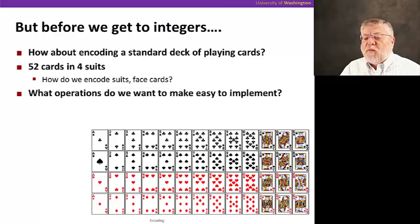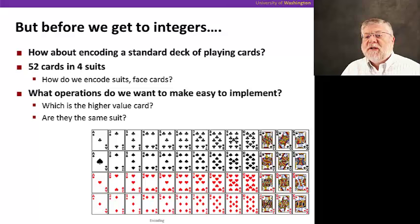And we want to figure out how to represent these in binary numbers. How do we use zeros and ones to represent all these cards? We could start by thinking about the operations we want to be able to do on the card.